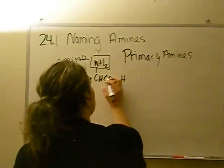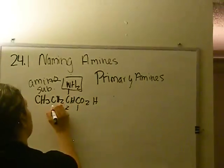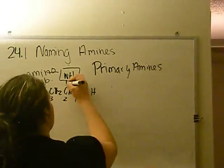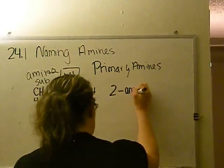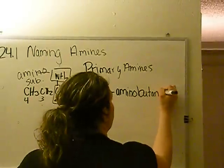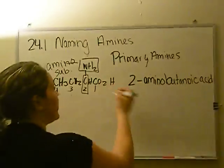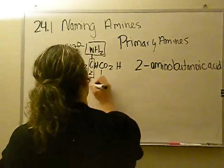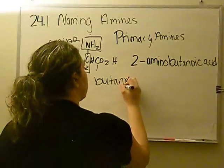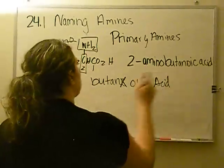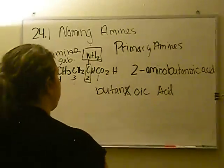You have to count the carbons. The one that has the carboxylic acid always gets priority. So counting: one, two, three, four — we have four carbons, and the amino group is actually on C2. So it would be 2-aminobutanoic acid. As we learned in chapter 21, when you have a carboxylic acid, you take butane — the alkane — and when you have a butanoic acid, you get rid of the 'e' and add 'oic acid.' So it's butanoic acid. And because the amino is on number two, you give the name 2-aminobutanoic acid.